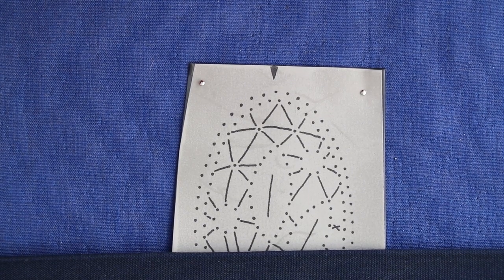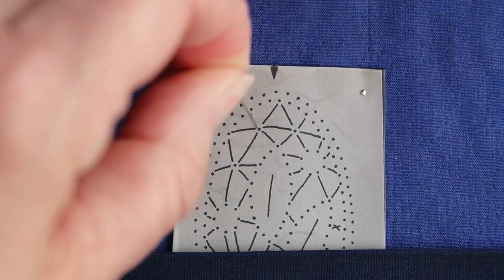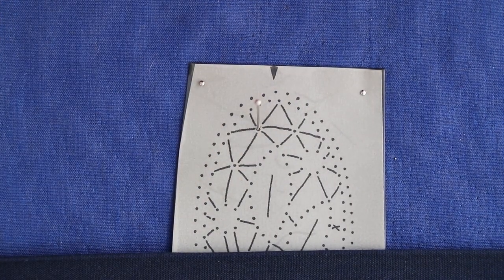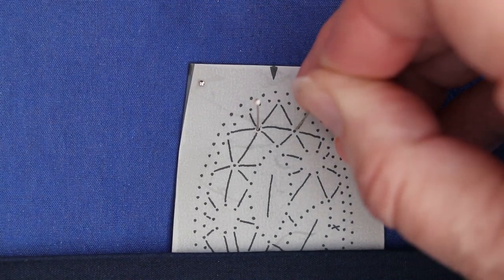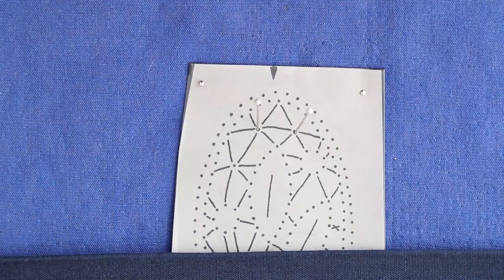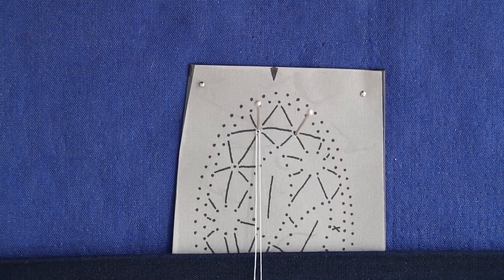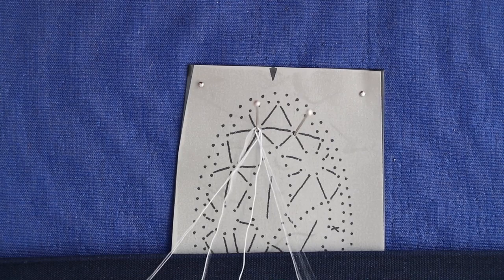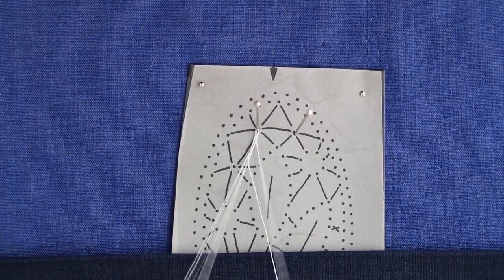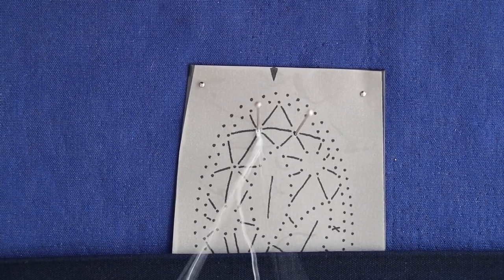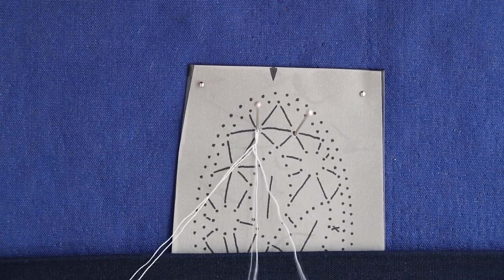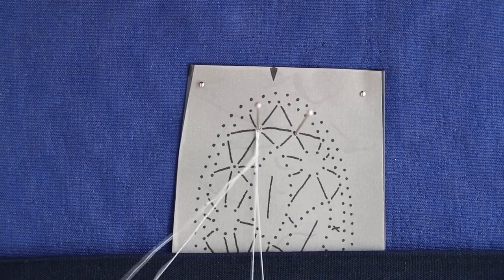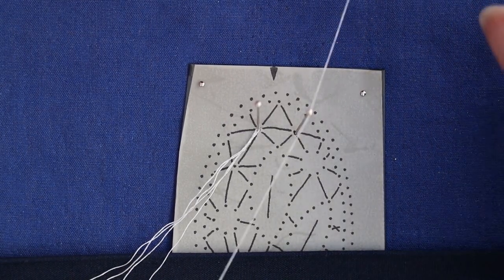I'm going to imagine two pairs, two plaits coming in from each side and I'm just going to put temporary pins in to form the plaits from. You can imagine these are coming off the six pair crossings and I'll just do the plaits so we can see them coming in. And the same on the other side.